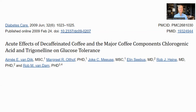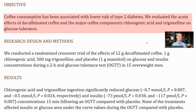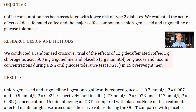Stepping away from muscles, there was a human trial with trigonelline where it was being tested with coffee and chlorogenic acid to see if there was any impact on glucose tolerance. Coffee consumption reduces the risk of type 2 diabetes. The study was a randomized placebo-controlled crossover trial comparing 12 grams of coffee, 1 gram of chlorogenic acid, and 500 milligrams of trigonelline.